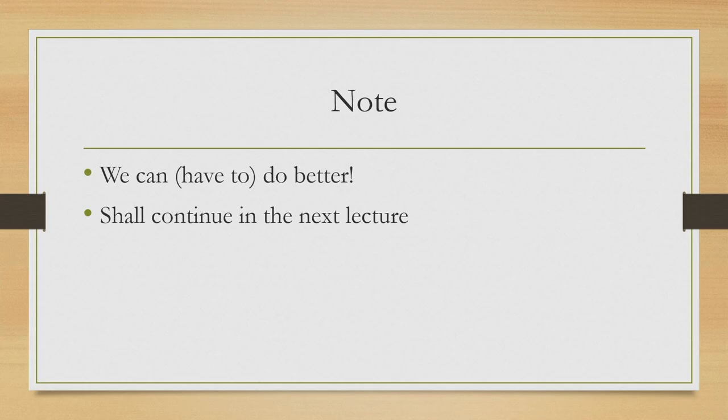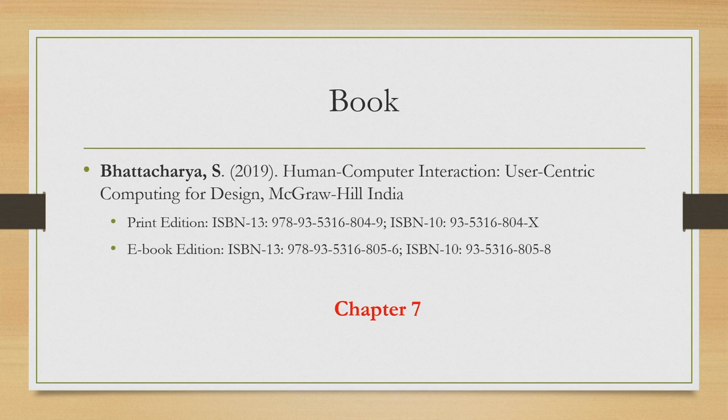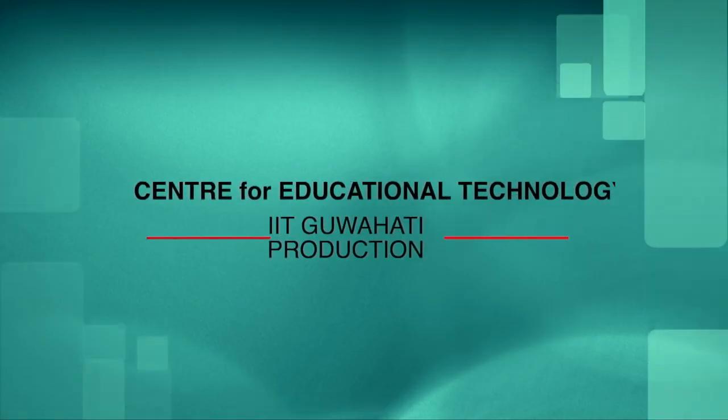With that we have come to the end of this lecture. We have introduced the first stage — formulation of an appropriate research question — which is the first stage of any empirical research method. We have also learned the need for empirical research and the four stages that have to be performed in sequence. We will continue our discussion in the next and subsequent lectures. The topics covered can be found in the book Human-Computer Interaction: User-Centric Computing for Design, chapter 7. Thank you and goodbye.